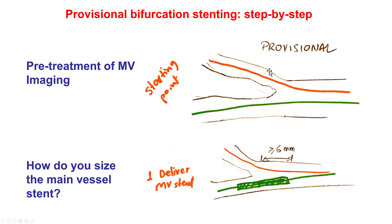We always like to wire the side branch in the majority of cases if there is some chance of occlusion, for many reasons. First, it makes it easier to recover the side branch if it becomes occluded during stenting of the main vessel. Also, it can favorably modify the angle.